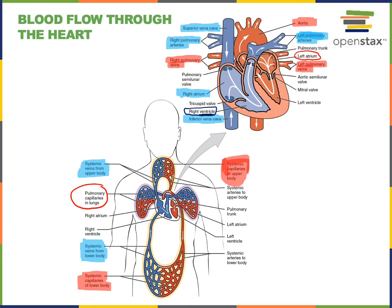The thickness of the walls of the ventricles reflects this fact. The left ventricle has much thicker walls than the right ventricle. Here we see that the wall of the left ventricle is very thick, while the right ventricle has a relatively thinner wall. This is because the right ventricle pumps blood into the pulmonary arteries and produces a lower blood pressure relative to the left ventricle, which pumps blood into the systemic arteries.